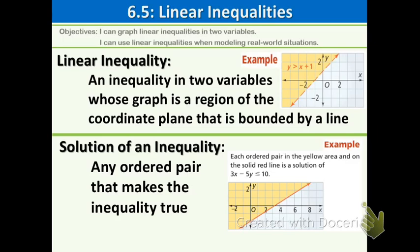Now that we know what a linear inequality is, let's talk about what a solution of an inequality is. It is any ordered pair that makes the inequality true. You can see at the very bottom right we have another graph, and each ordered pair that is in the yellow area and on the solid red line is a solution of this given inequality. So we no longer just have one answer — we have infinitely many.